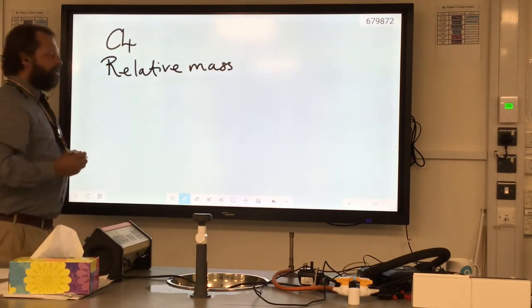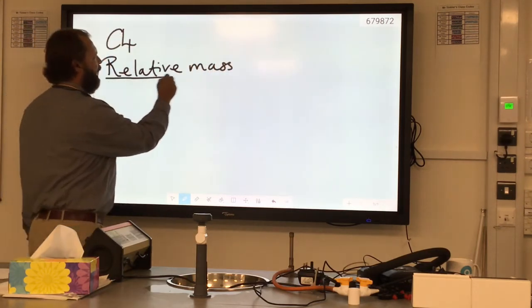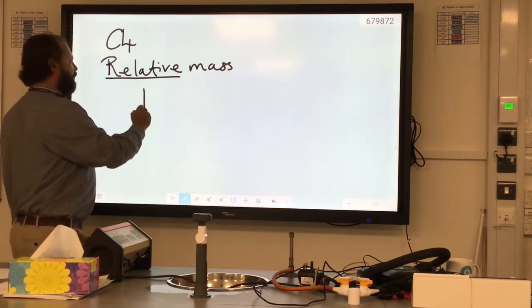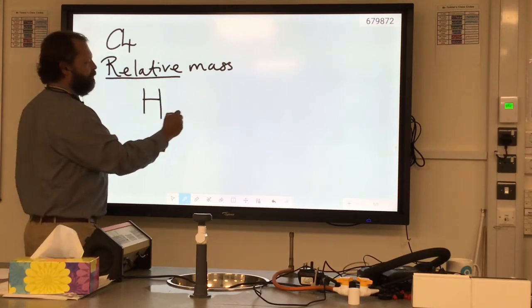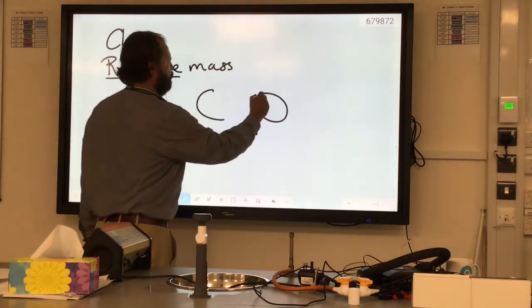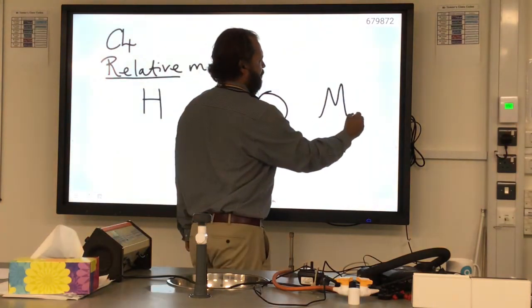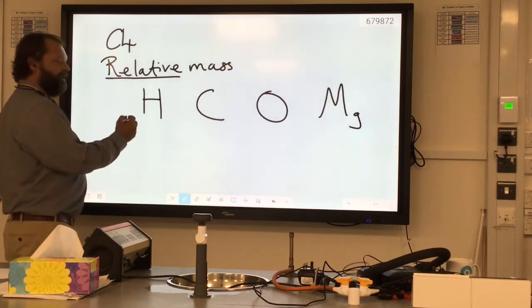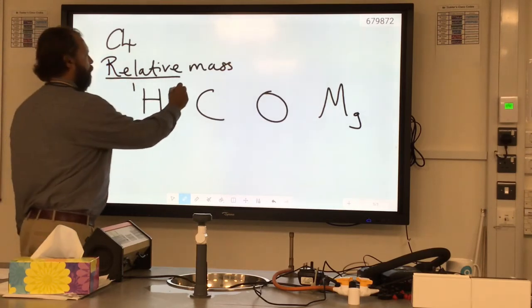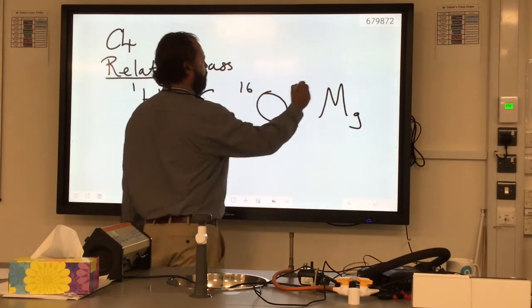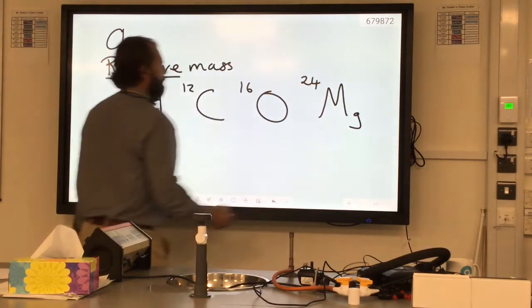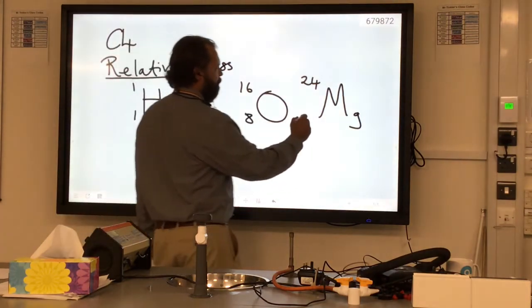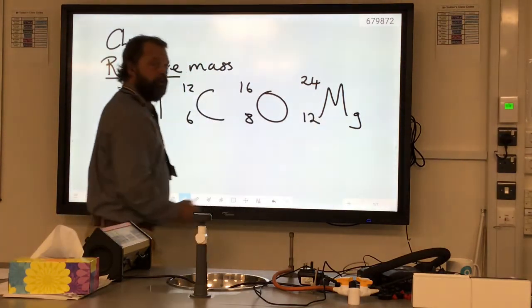So think about what relative means. It means comparing one thing to another. And if we take some examples of atoms - hydrogen, carbon, oxygen, magnesium - each of these elements has a number. And a mass number is the big one at the top. Remember, they also have a small number, which is their number of protons and the position on the periodic table.